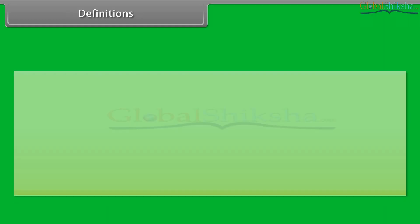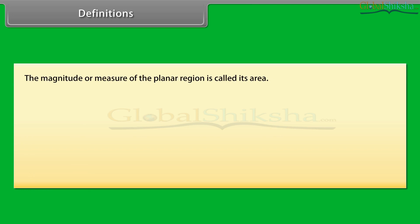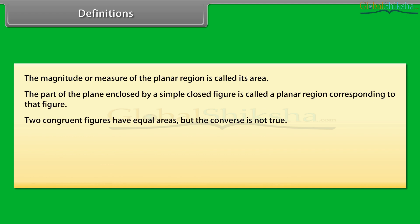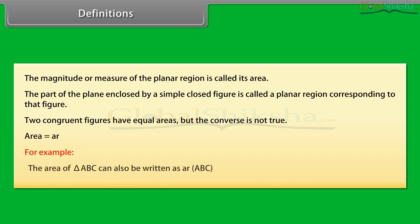Students, the magnitude or measure of the planar region is called its area. The part of the plane enclosed by a simple closed figure is called a planar region corresponding to that figure. Two congruent figures have equal areas, but the converse is not true. The area of a figure can also be denoted by AR. For example, area of triangle ABC can also be written as AR(ABC).